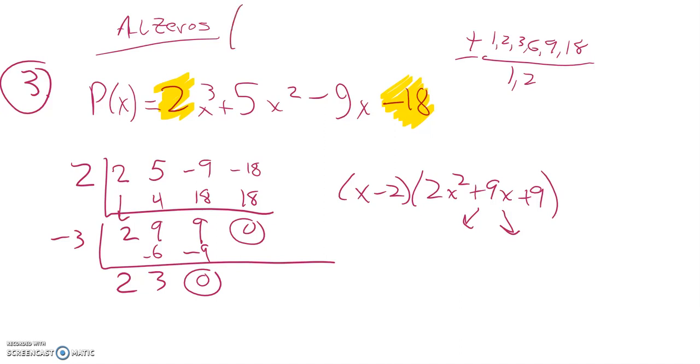So zeros I have so far are negative 3 and 2. And notice what I did here. I had already factored out an x minus 2. And then I had this quadratic. So I divided out or factored out an x plus 3. And what's left is 2x plus 3.